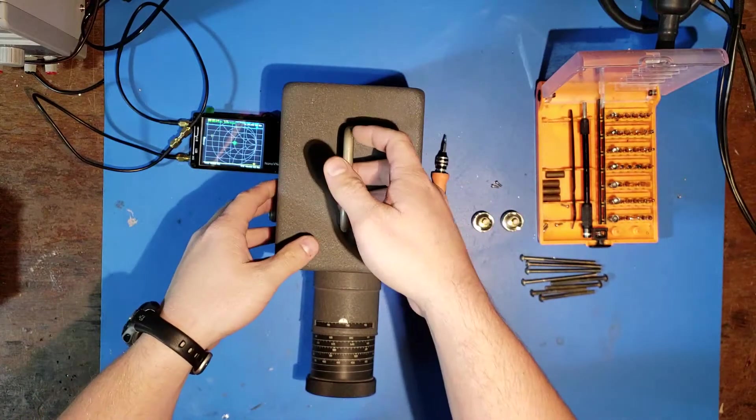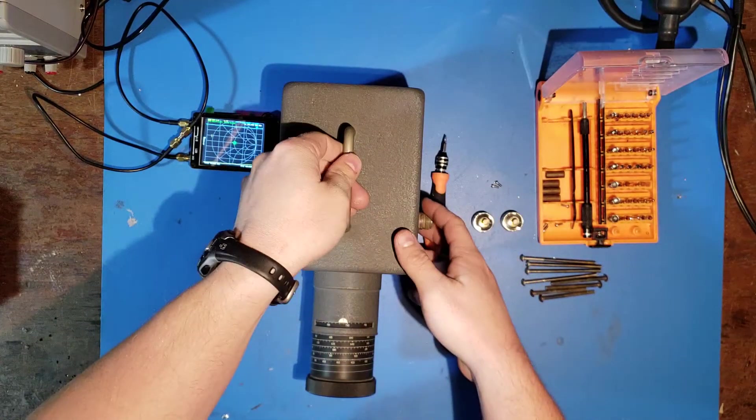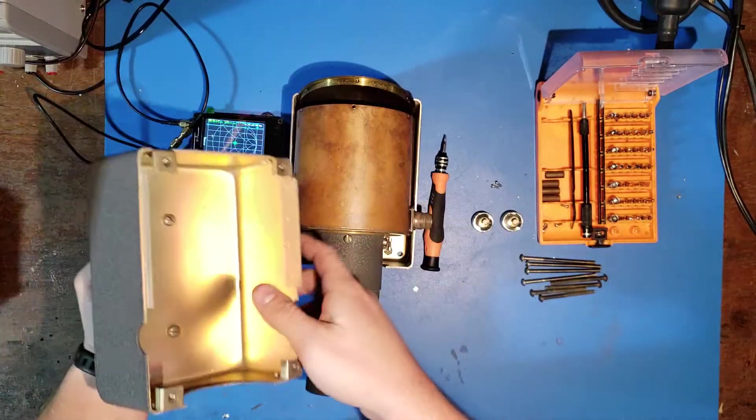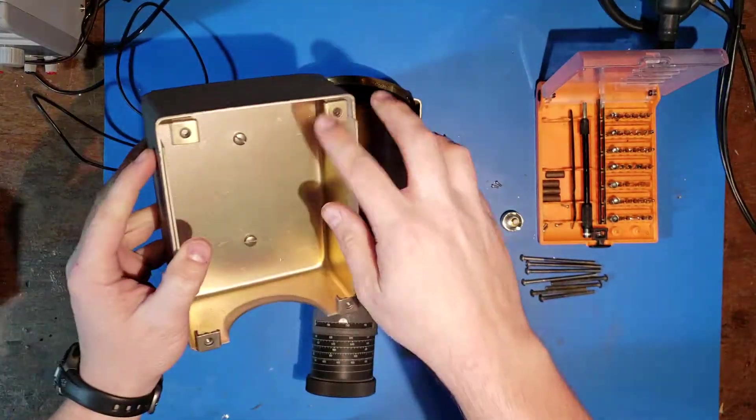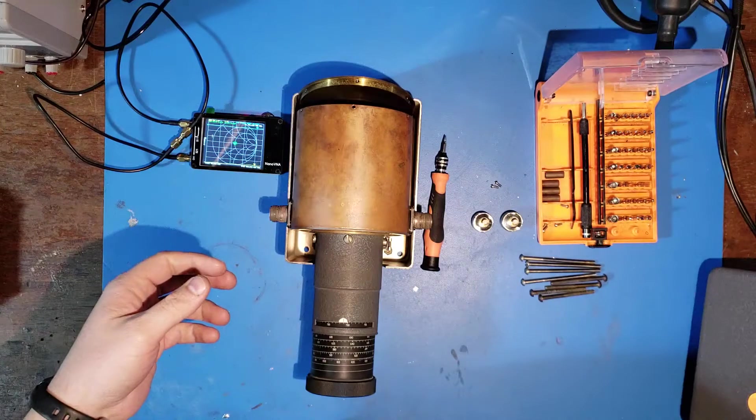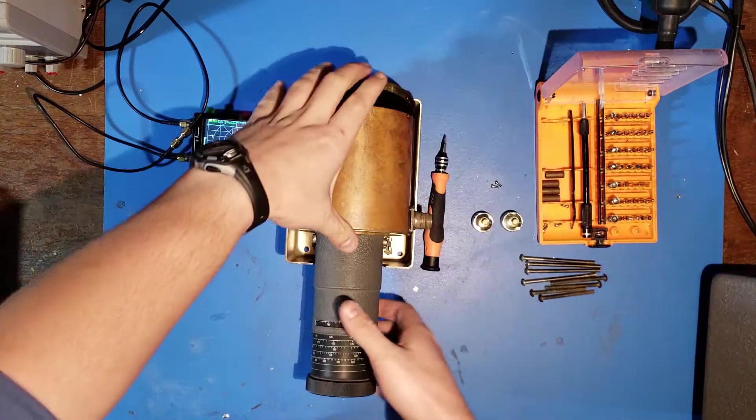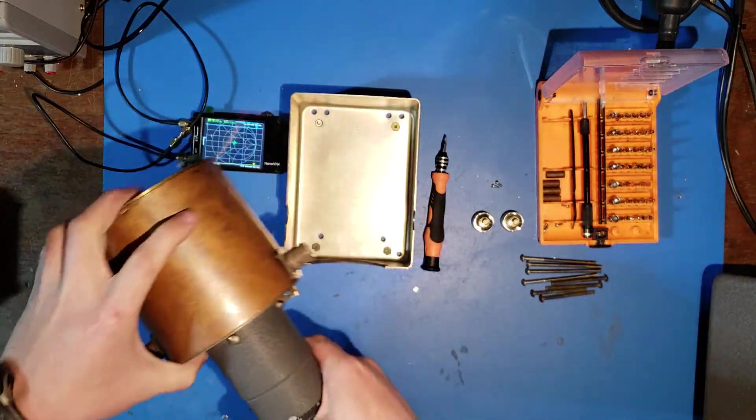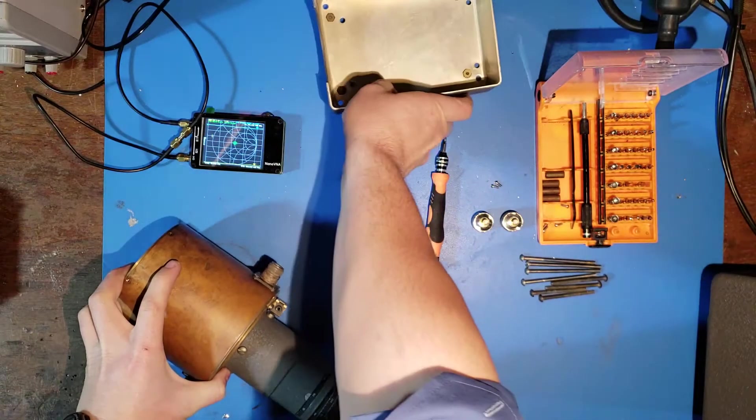I've already removed most of the screws here, so we can just pull this apart and take a look inside. Opening up the cover, you can see they made this out of metal, presumably as some sort of additional shielding. And then we pull out the actual cavity filter, move away the bottom of the metal case.